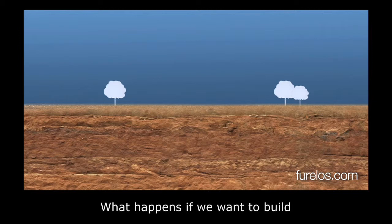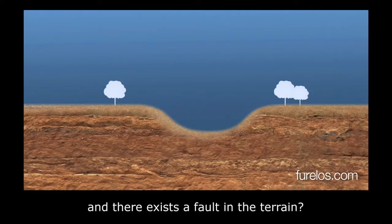What happens if we want to build a building on a certain area and there exists a fault in the terrain?